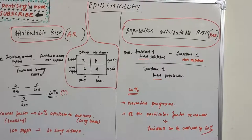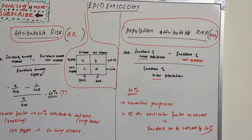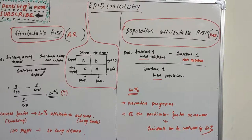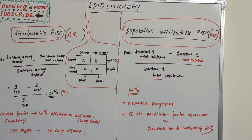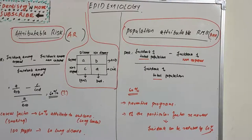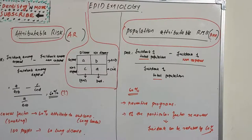Hello everyone, welcome back to Dentistry and More. We have another topic in epidemiology: attributable risk and population attributable risk. In cohort studies we analyze relative risk, which is a comparison of incidence among the exposed group and incidence among the non-exposed group, giving us a relative risk value — for example, four times the risk in the exposed group compared to the non-exposed group.